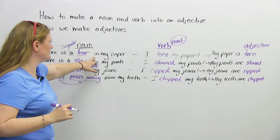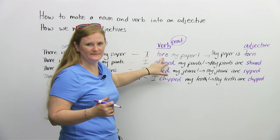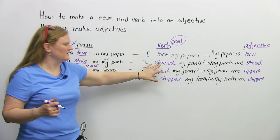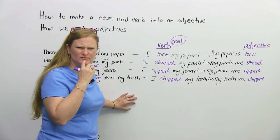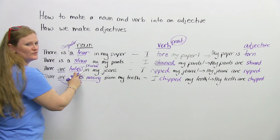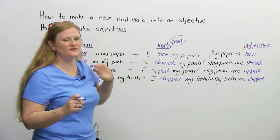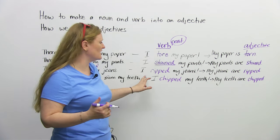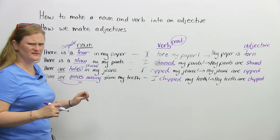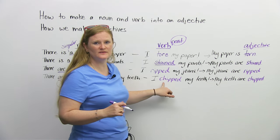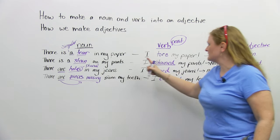For example, 'there is a tear in my paper' — the verb is 'tear' or 'tore,' so: 'I tore my paper.' Next: 'there is a stain on my pants' — we take the word 'stain' and make it past tense: 'I stained my pants.' 'There are holes in my jeans' — we can't say 'I holded my jeans' because 'holes' cannot change into a verb, so we use 'ripped': 'I ripped my jeans.' And 'there are pieces missing from my teeth' — we can't say 'pieceded,' but we can say 'I chipped my teeth.' 'Chipped' means there's a piece missing. So we've taken our noun and used it as a verb.